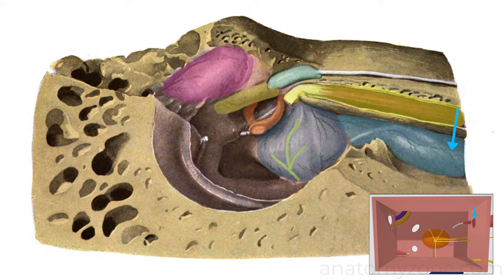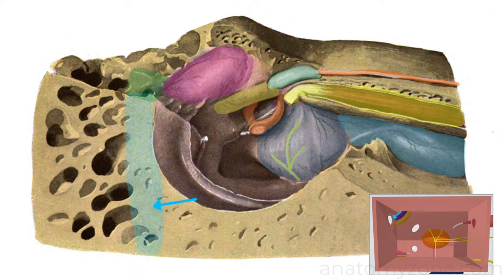This structure is the geniculate ganglion of the facial nerve, and this nerve here is the greater petrosal nerve. Looking towards the posterior wall, we see the opening to the mastoid antrum, and this bit of bone separating the tympanic cavity from the mastoid air cells. Here is the pyramidal eminence, and you can see the tendon of the stapedius muscle piercing through. You can see the tympanic membrane has been dissected away, and this structure entering into the middle ear cleft at the junction of the posterior and lateral walls is the chorda tympani.